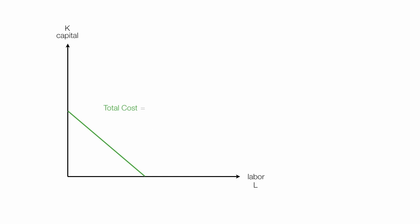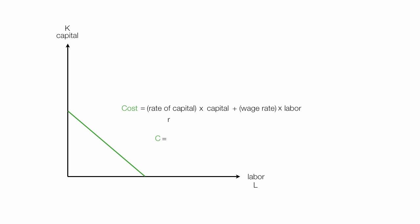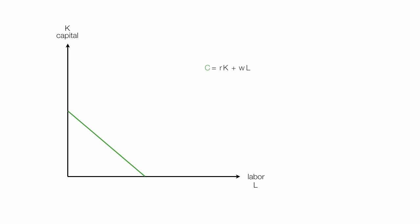Total cost is equal to the rate of capital, or the cost of capital, times the amount of capital used, plus labor costs, which are the wage rate times the quantity of labor used. I'm talking about the quantity of capital and the quantity of labor. This is typically written as C for cost equals R the rate of capital times K, plus W for wages times L — so C equals RK plus WL.